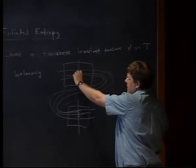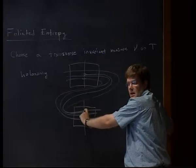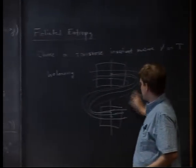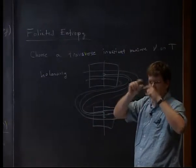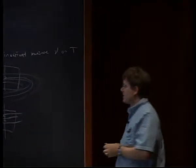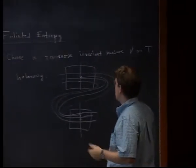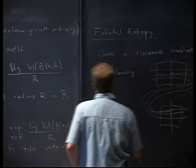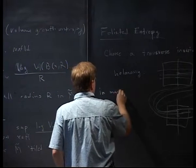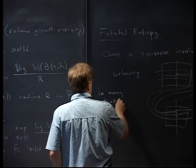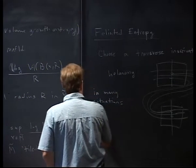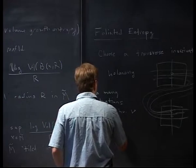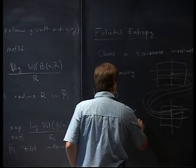Whatever the measure says a set is, it better be the same after holonomy translation. Now, unlike what this picture might suggest, these transverse invariant measures don't always exist — the reason is that in a compact set there are ways of coming back to yourself such that you can't possibly have the same measure. For what I'm discussing, I'll present theorems for transverse invariant measures, but I'll mention that in many situations a quasi-invariant nu is good enough — though not always. It depends on how bad the map is.